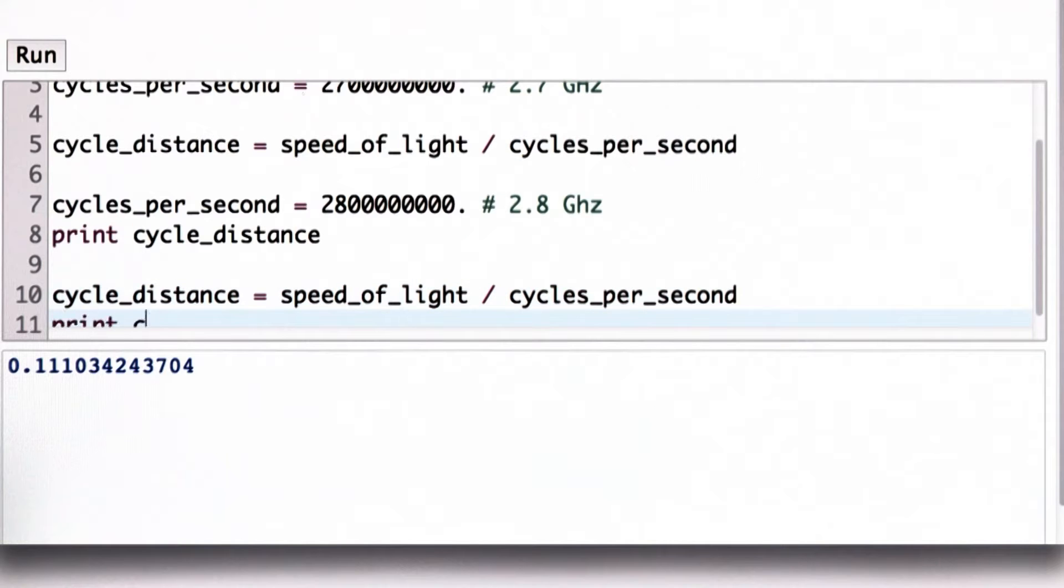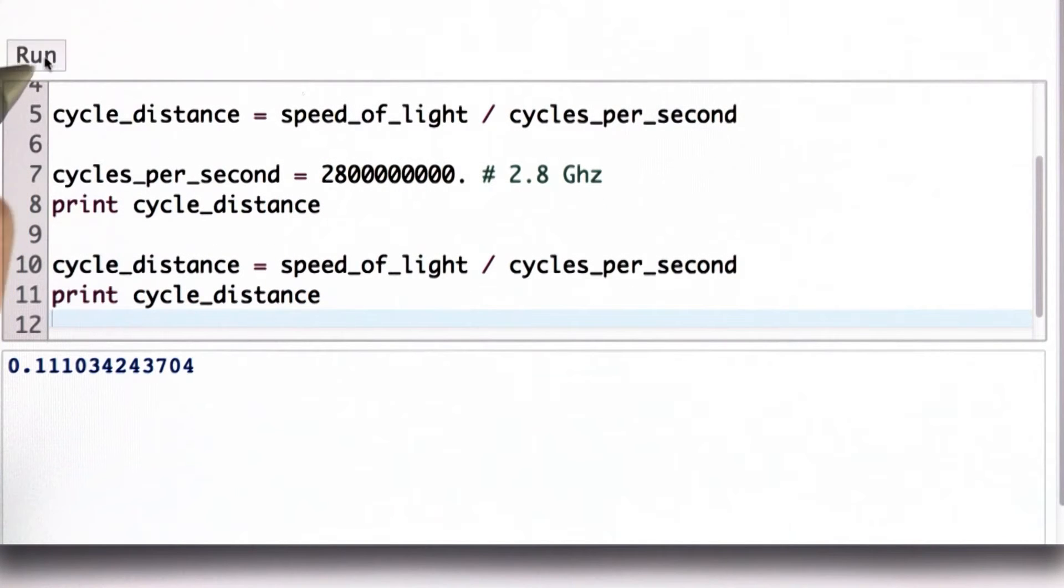And now when we print cycle_distance, we see that the value has changed. So we have a faster processor the second time we print cycle_distance. Now we only have 0.107 meters, less than 11 centimeters per cycle.